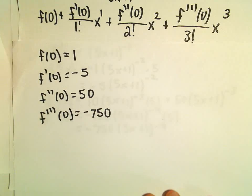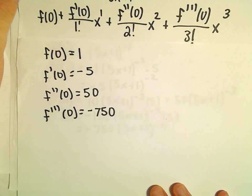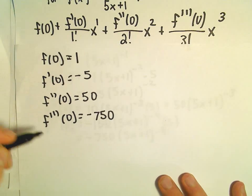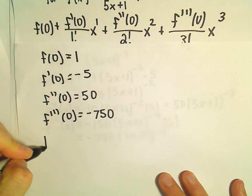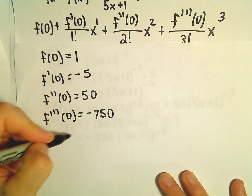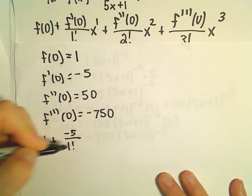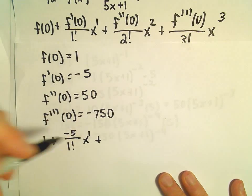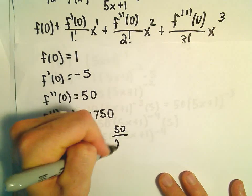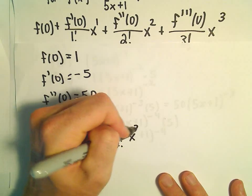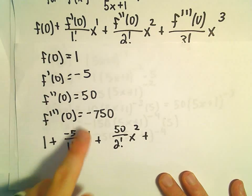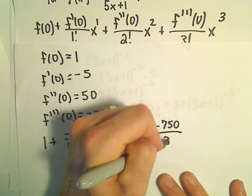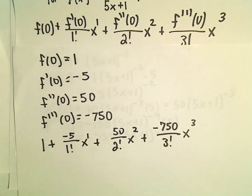Now when we fill in our formula, f(0) + f'(0)/1! times x, and so on: f(0) is 1; f'(0) is negative 5 over 1 factorial times x; f''(0) is 50 over 2 factorial times x squared; and f'''(0) is negative 750 over 3 factorial times x cubed.